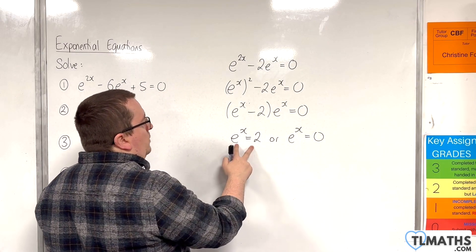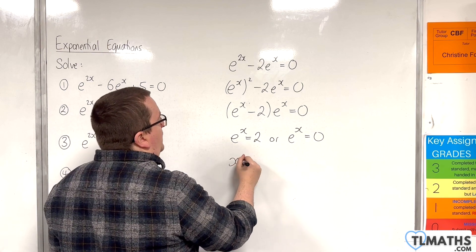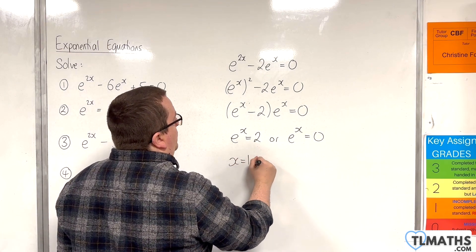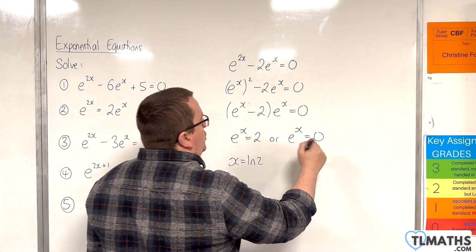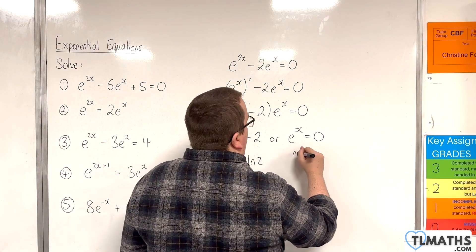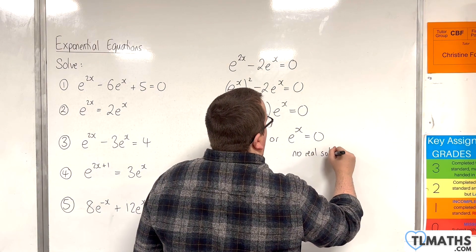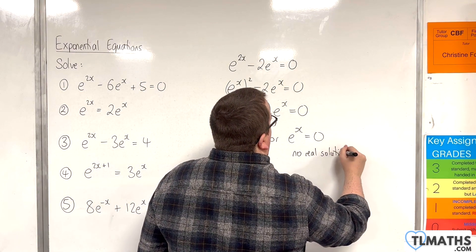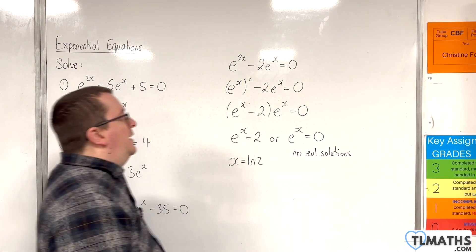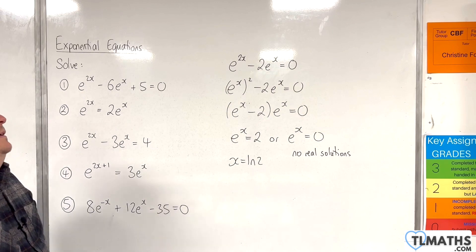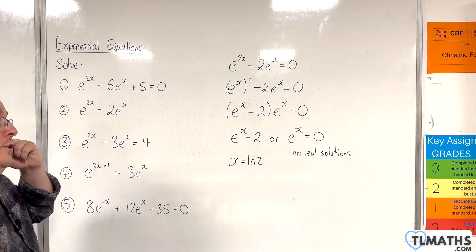So either e to the x is equal to 2, or e to the x is equal to 0. For e to the x equals 2, x would be the natural log of 2. The equation e to the x equals 0 has no real solutions, because e to the x does not cross the x-axis. That's one way of doing it.